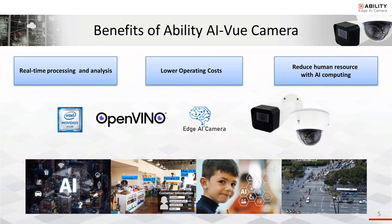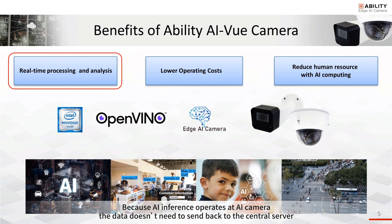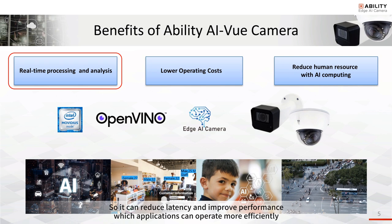What are the benefits of AI View Camera? One benefit is that it can increase the speed of data processing and analysis accuracy. Because AI inference operates on the AI camera itself, the data does not need to be sent back to the central server, which reduces latency and improves performance so that applications can operate more efficiently.